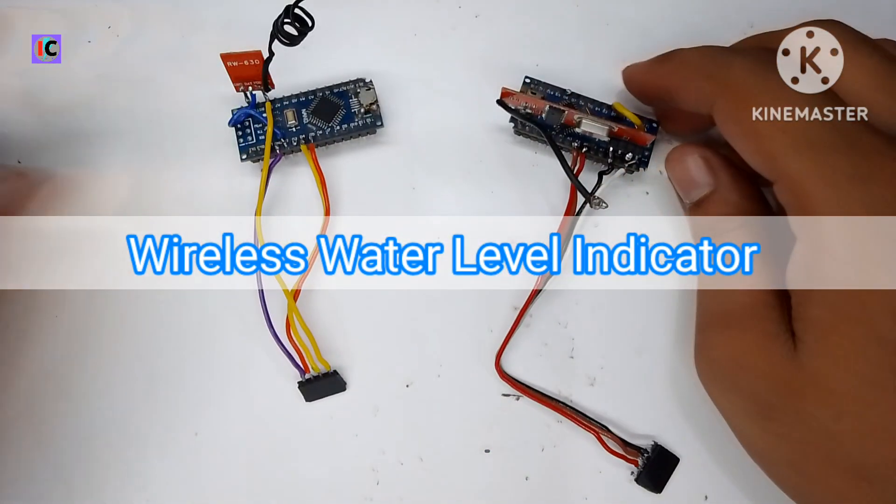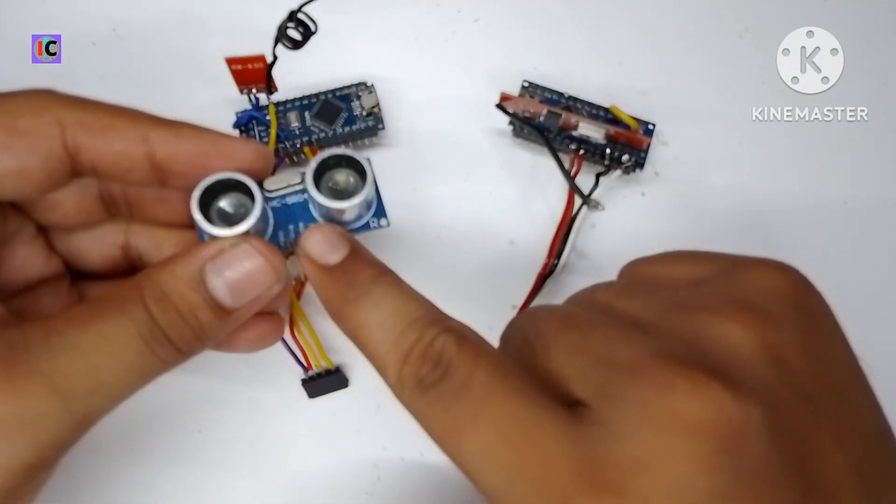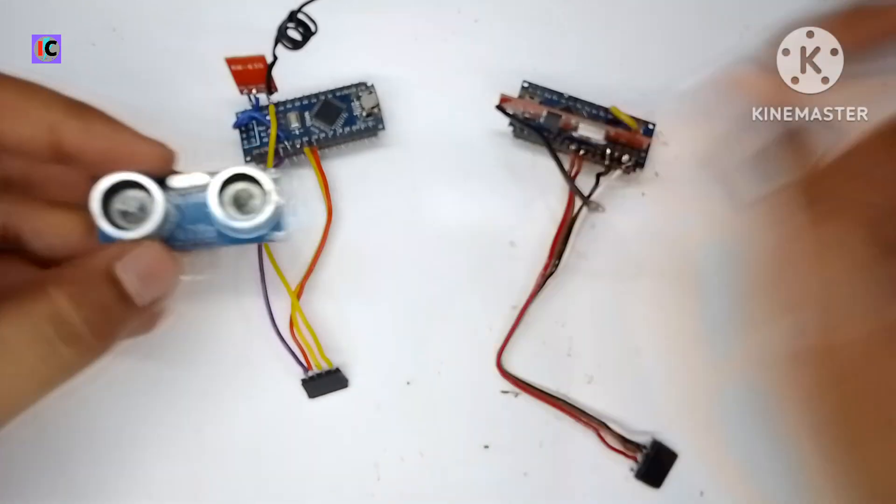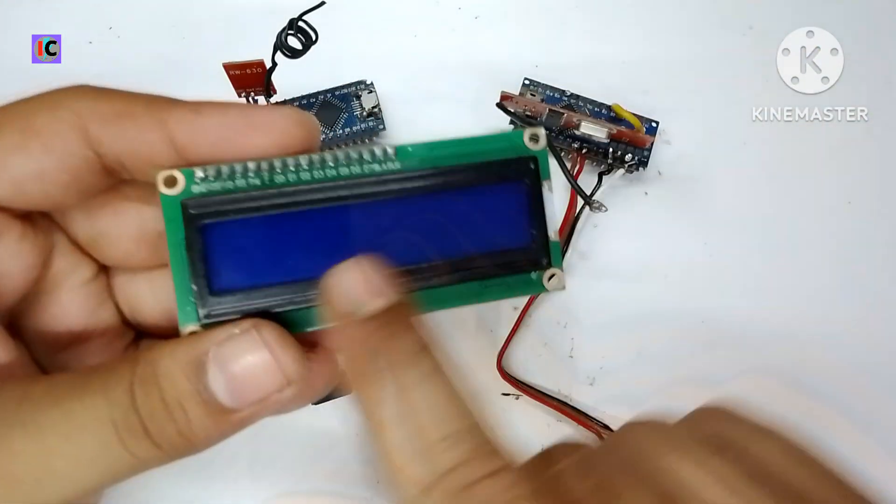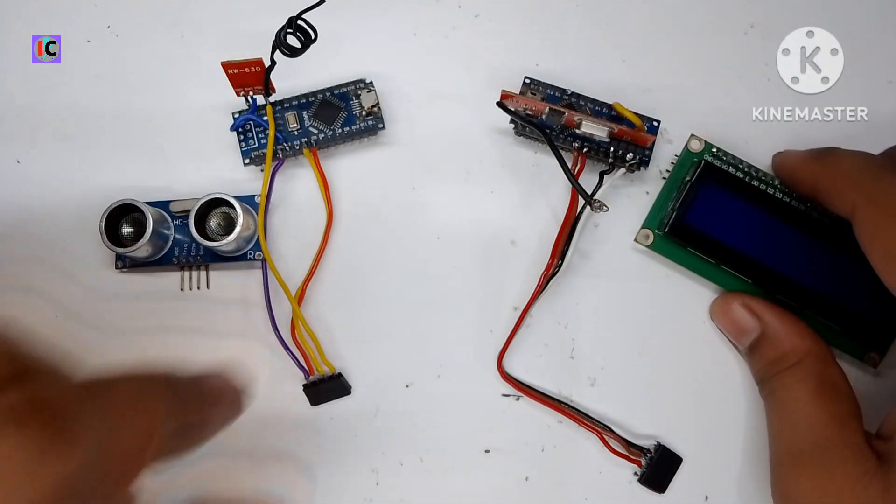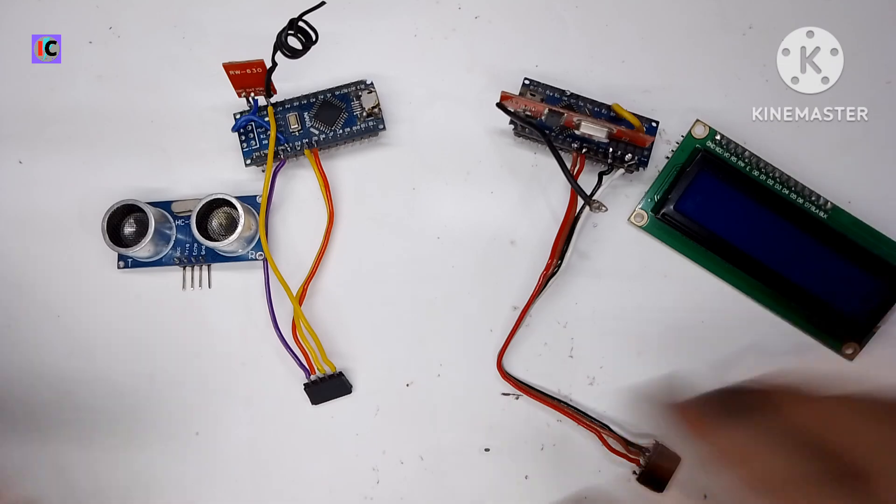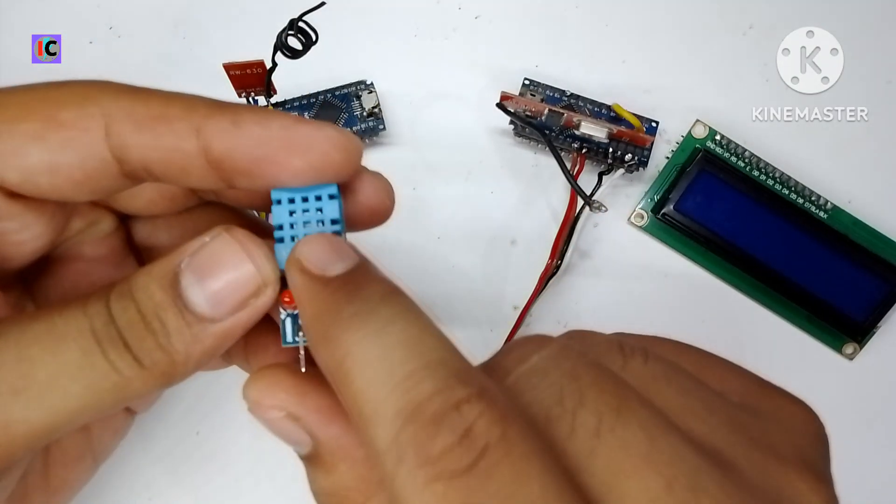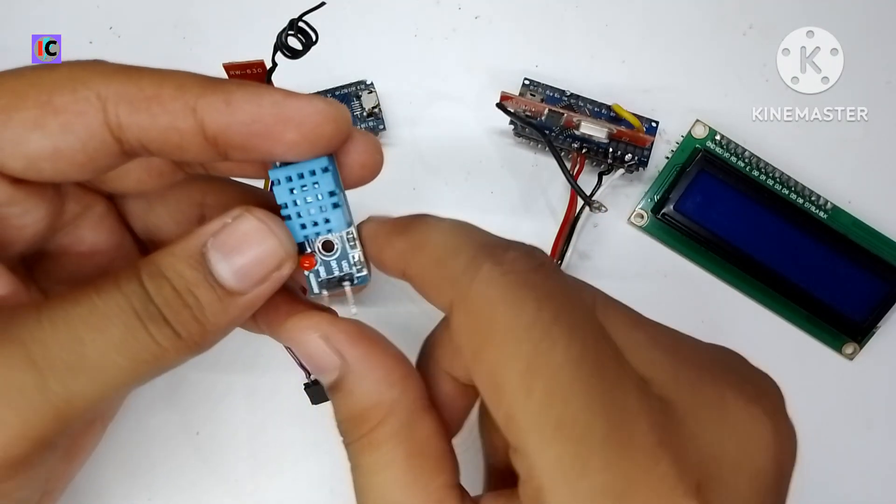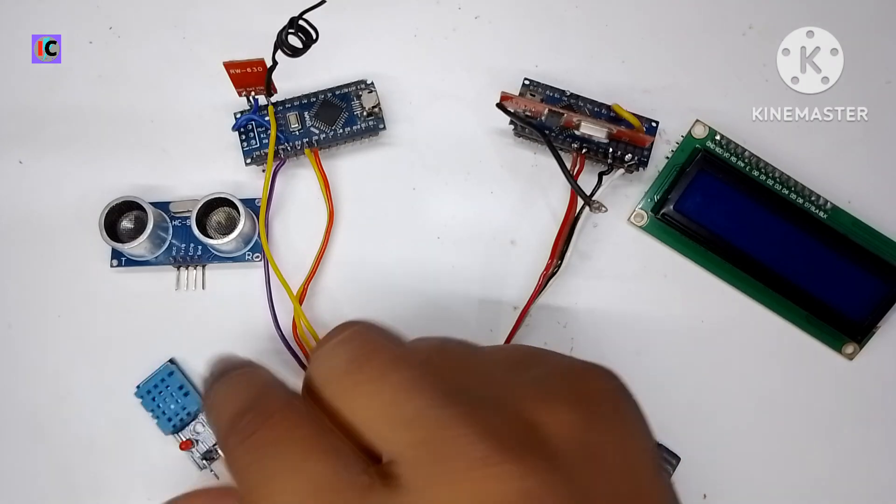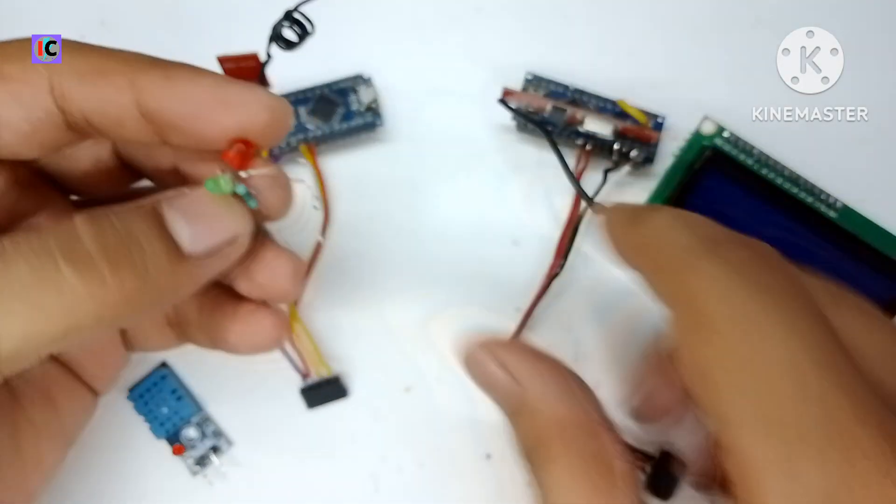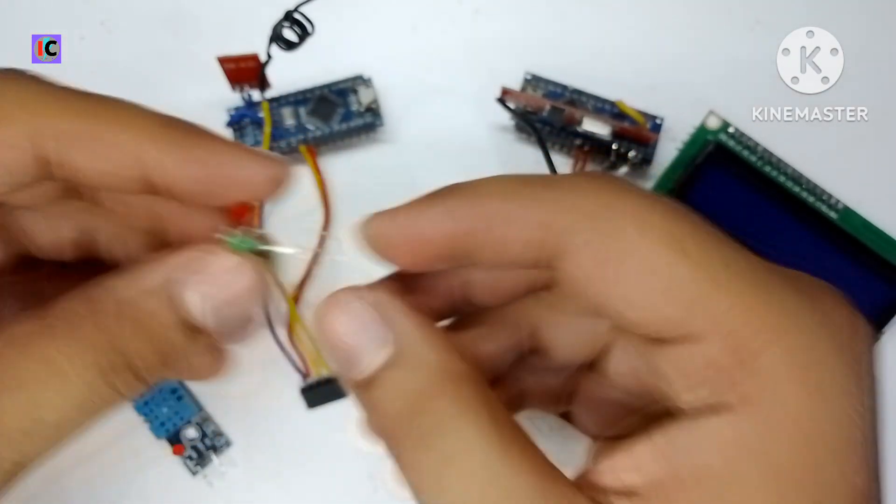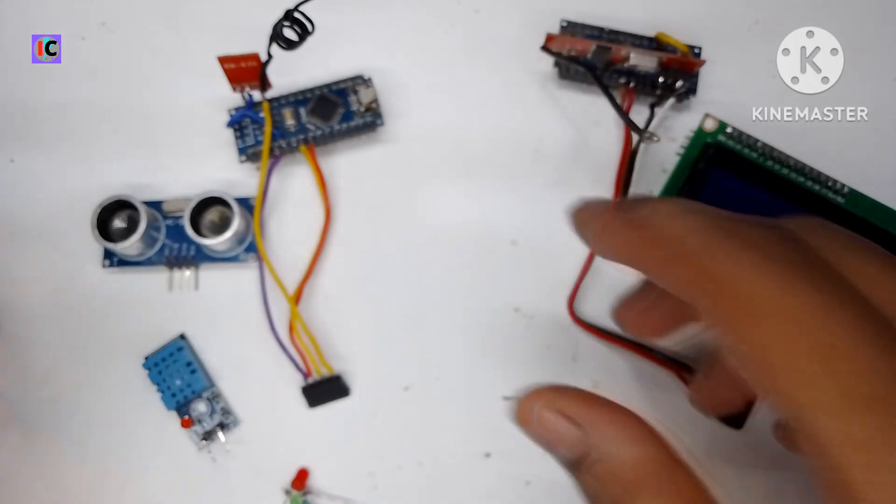Hello friends, welcome back to my channel. In this video we're going to see the upgraded version of the wireless water level indicator which I made in my previous video. The upgrade for this module is adding a DHT11 temperature sensor and some LEDs and a buzzer to indicate the water percentage.